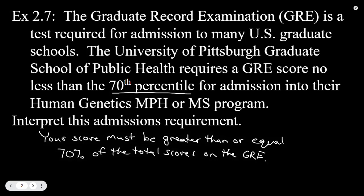So the 70th percentile means your score must be greater than or equal to 70% of the total scores on the GRE. They are comparing your score to everybody else who's taking the GRE, and your score must be greater than or equal to 70% of the total scores on that test if you are going to be in the 70th percentile.